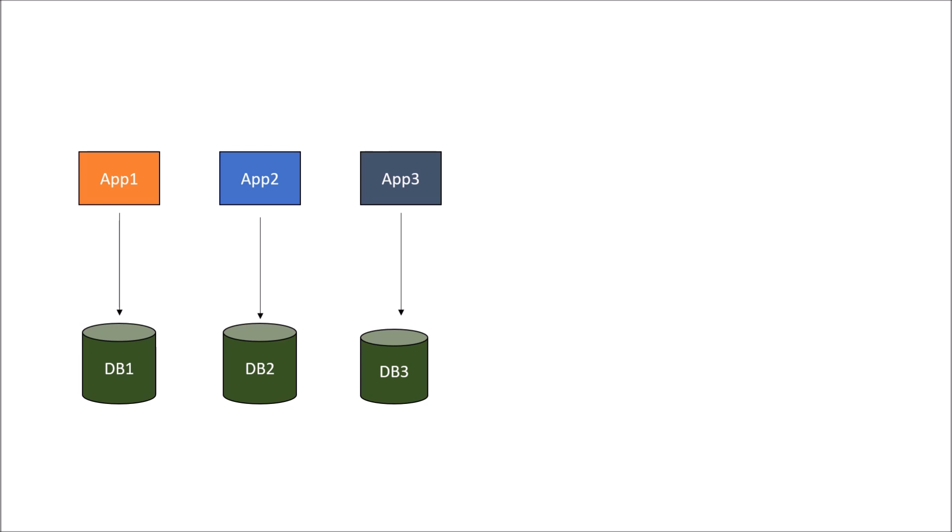Now all those concerns we looked at previously get addressed. The first advantage of using database per service is loose coupling between service and database. Application 1 has a dedicated database DB1. If application 2 needs data from DB1, it would have to go through application 1 and use the methods present in application 1 to get the data of DB1.